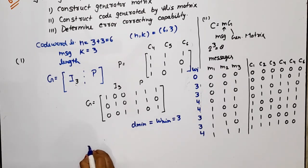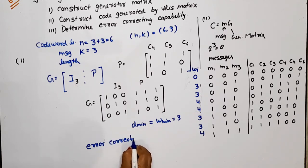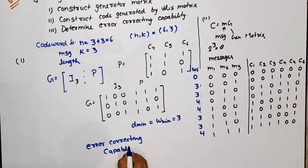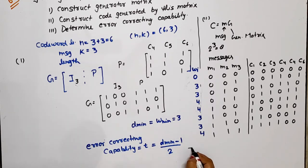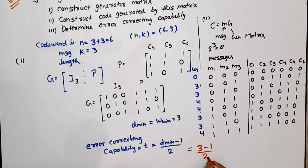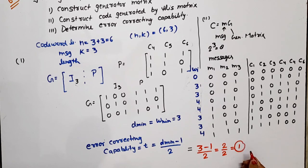The error correcting capability is given by T = floor((D_minimum - 1) / 2). Substituting D_minimum = 3: T = (3 - 1) / 2 = 2 / 2 = 1. This means the code can correct only a single error.